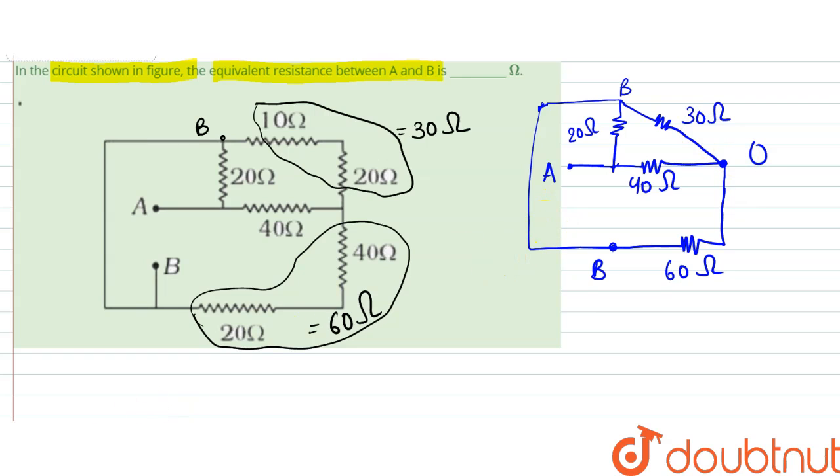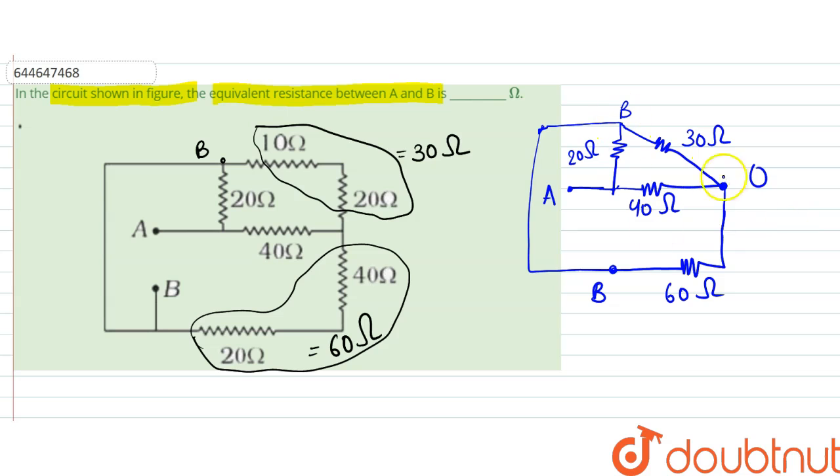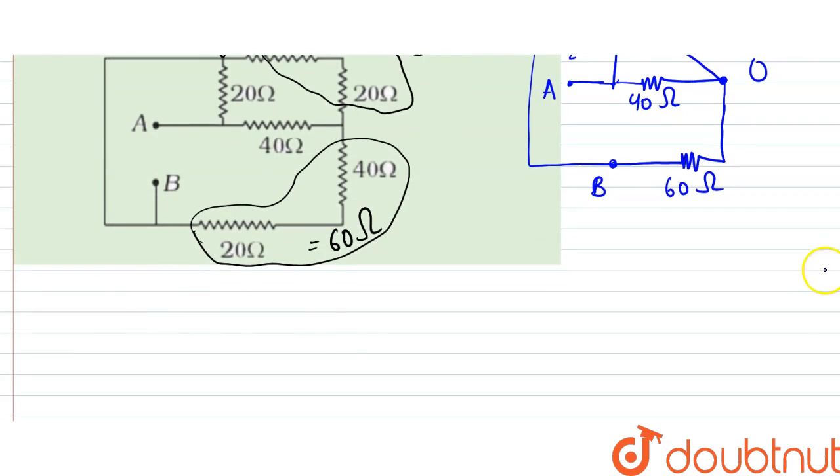So from here, between B and O, there are two resistances. So they would be in parallel.